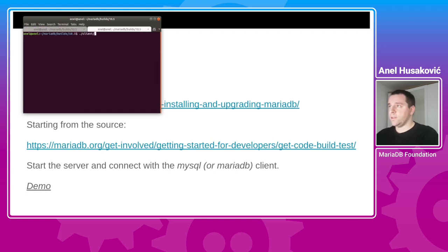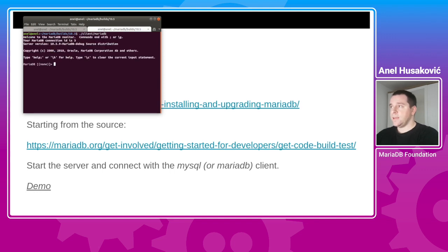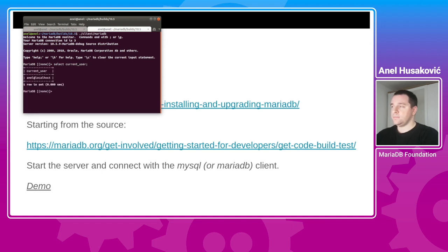We will connect to the server running the mysqld binary — currently the mysqld server is running in debug mode. After that we will connect to the client. One option is to connect with mysql, but starting from 10.5 there is also a mariadb symlink. We can inspect and run SQL queries here. Okay, so we are sure it works.